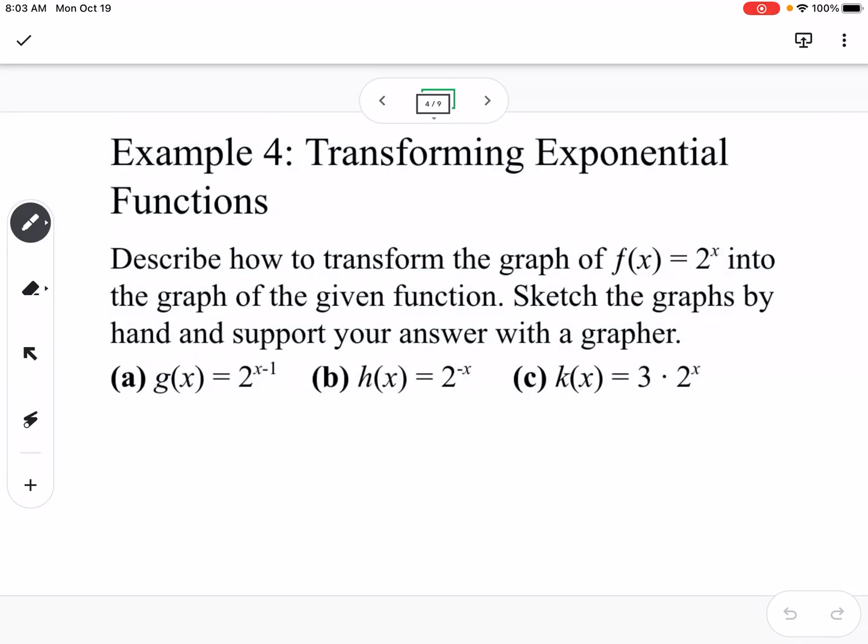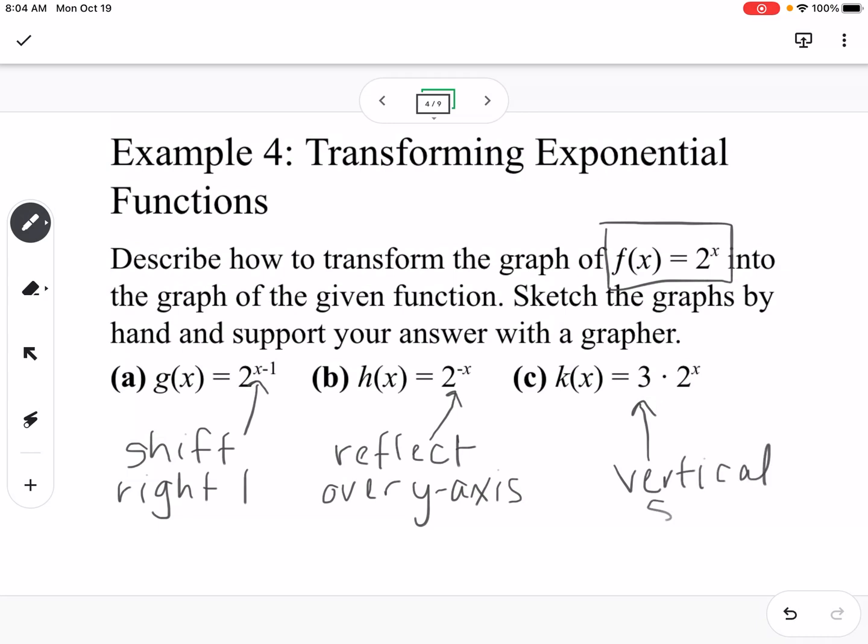Okay, next example, we're talking about transformations. So each of these graphs, we're going to talk about how are they transformed from the parent function f of x equals 2 to the x. So similar to the h, k, and a value that we've looked at with many different functions. If you have a plus or minus in the exponent with x, so this is x minus 1, this is going to be a shift to the right one. Here we have a negative with the x, so we know that's going to be a reflection. And since it's with the x and not out front of the whole function, it's going to be a reflect over the y-axis. And then finally, the 3 out front is going to be a vertical stretch, it's like our a value, vertical stretch by factor of 3. So those are our transformations.